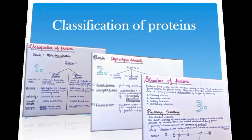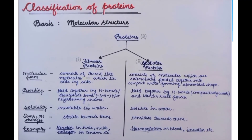The first basis of classification would be molecular structure. Proteins on the basis of their molecular structure are classified into two types: first is fibrous proteins and second is globular proteins. We will study the properties of both and analyze the differences between them.